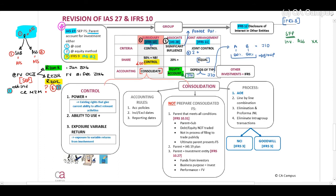Now let's move on and look at IFRS 10. First, we will discuss what is control, and then we will look at our consolidation process. Let's discuss the definition of control. Control would exist if and only if the investor has all of the following: there has to be power over the investee, plus the ability to use the power, plus the exposure to variable returns.